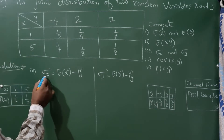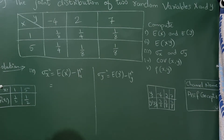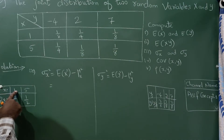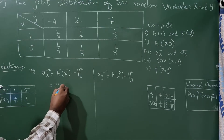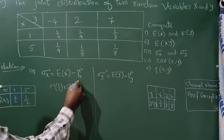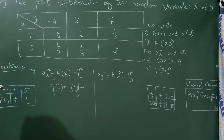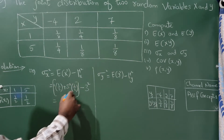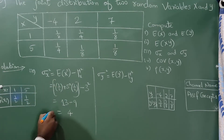Now, σ_X² = E(X²) − μ_X². Computing E(X²): 1² · (1/2) + 5² · (1/2) = 1/2 + 25/2 = 13. Then σ_X² = 13 − 3² = 13 − 9 = 4.